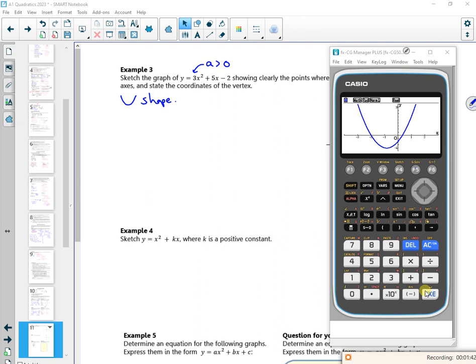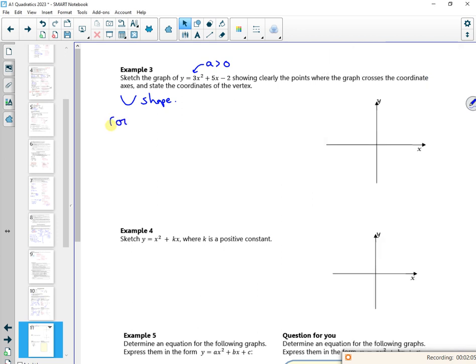If I check the roots, if I do g-solve on roots, it tells me at minus 2 and then if I press right it gives me a third. And then if I do g-solve for the vertex, it's a minimum point. If you look, they're crazy decimals. So I'm going to have to do something proper for that. So I know that the roots were x equals minus 2, x equals a third. But in terms of my vertex, I want to complete the square for the vertex.